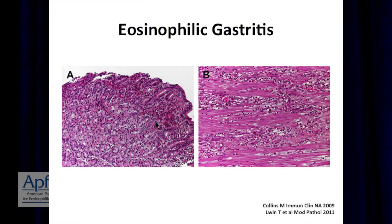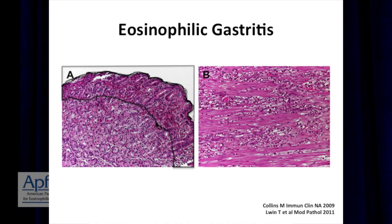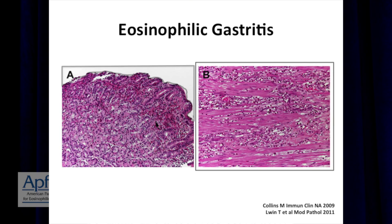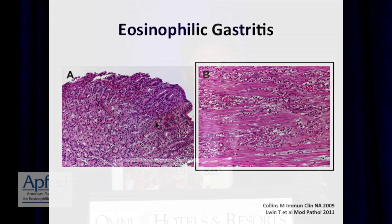In this slide, you can see the tissue that's affected. There are too many eosinophils in the lining right here. This is the lumen, or the inside of the stomach, and then deeper down within the muscle layer, those cells also go.